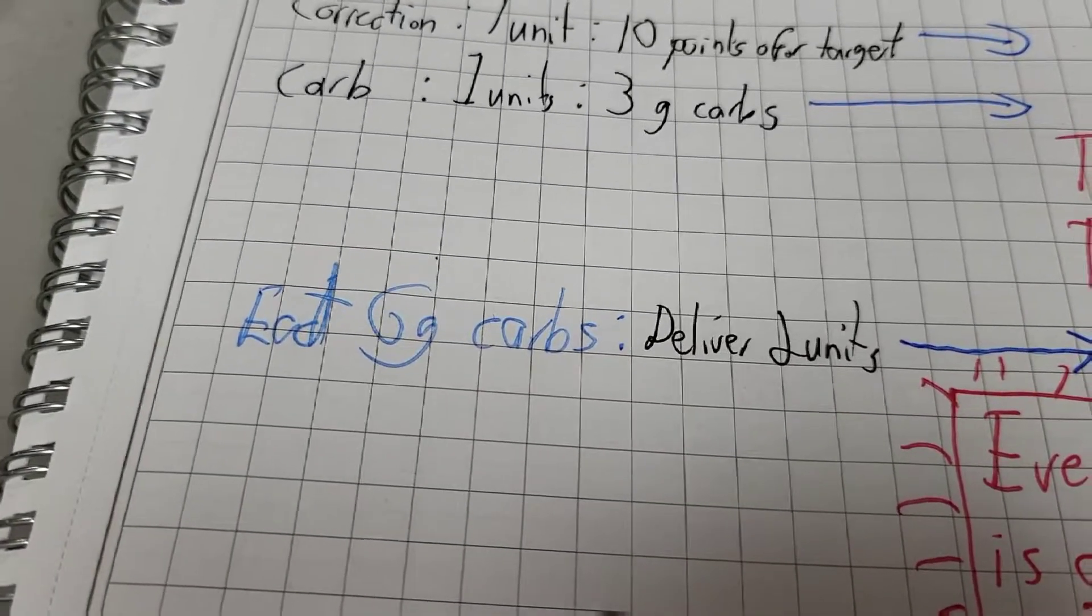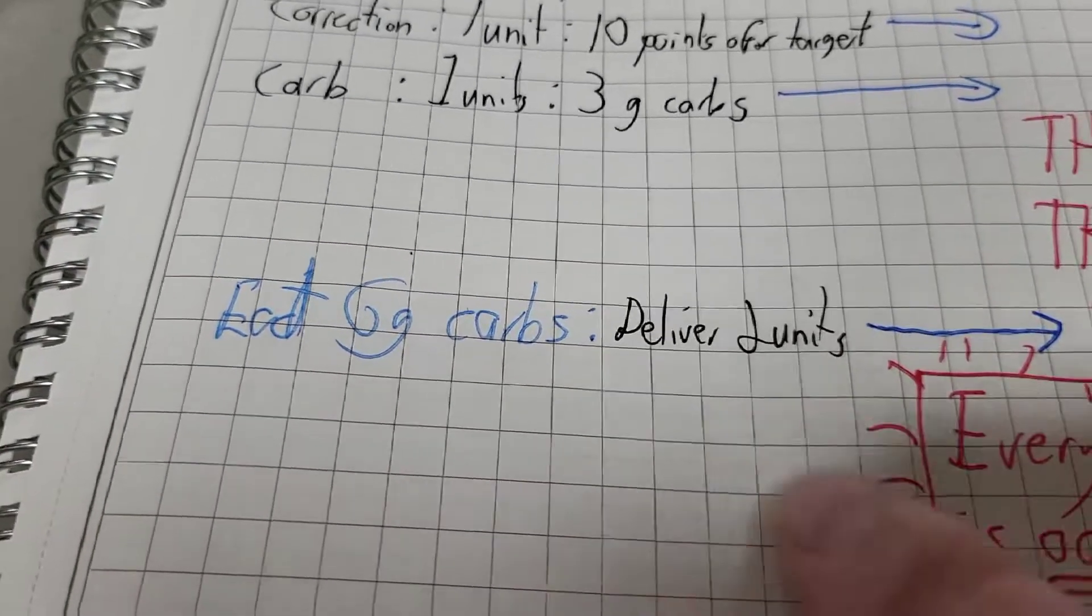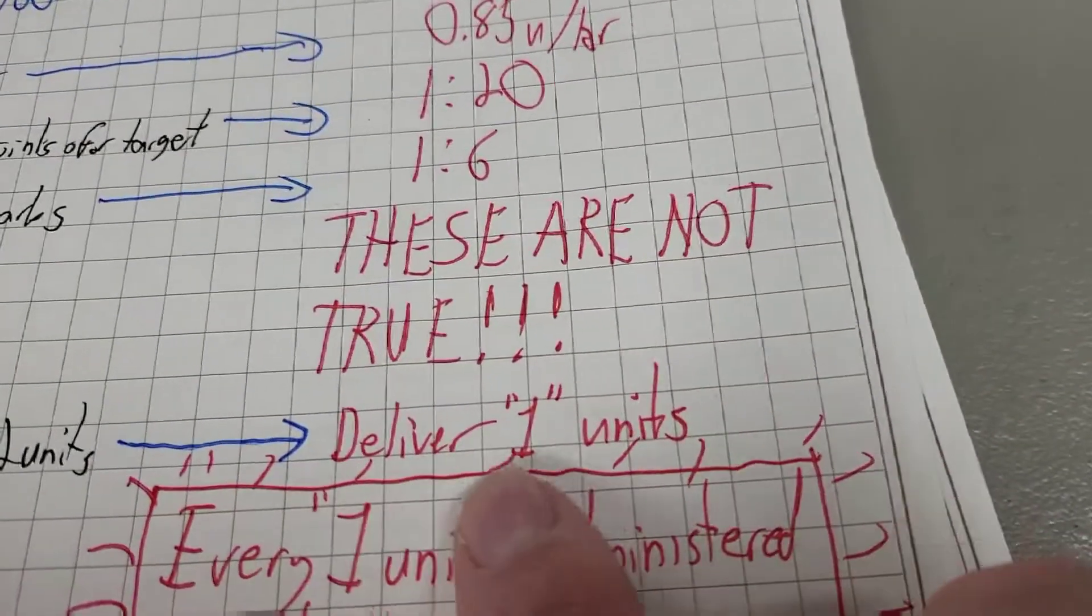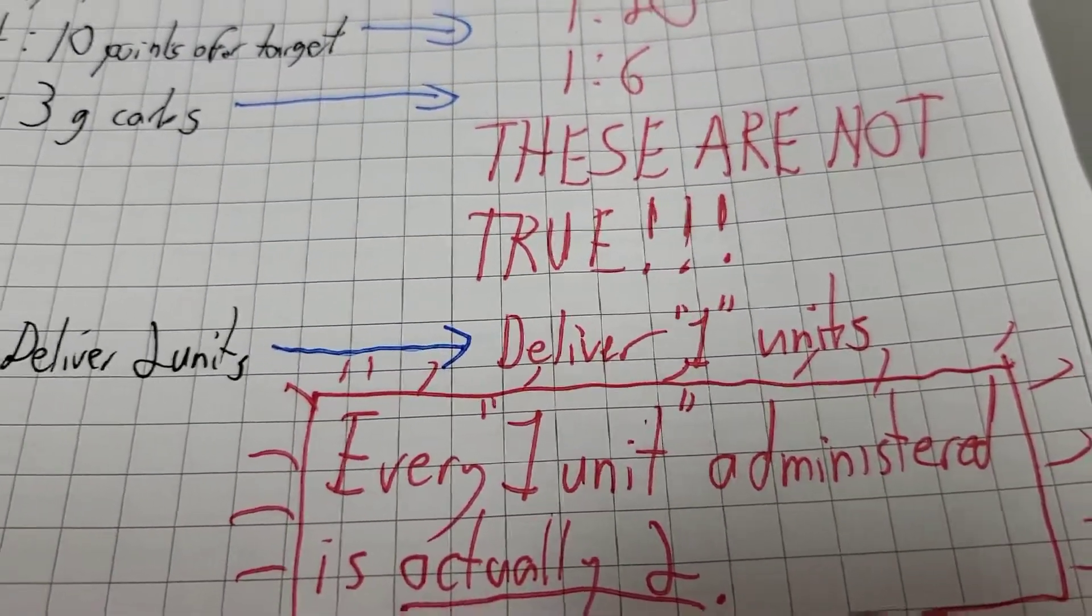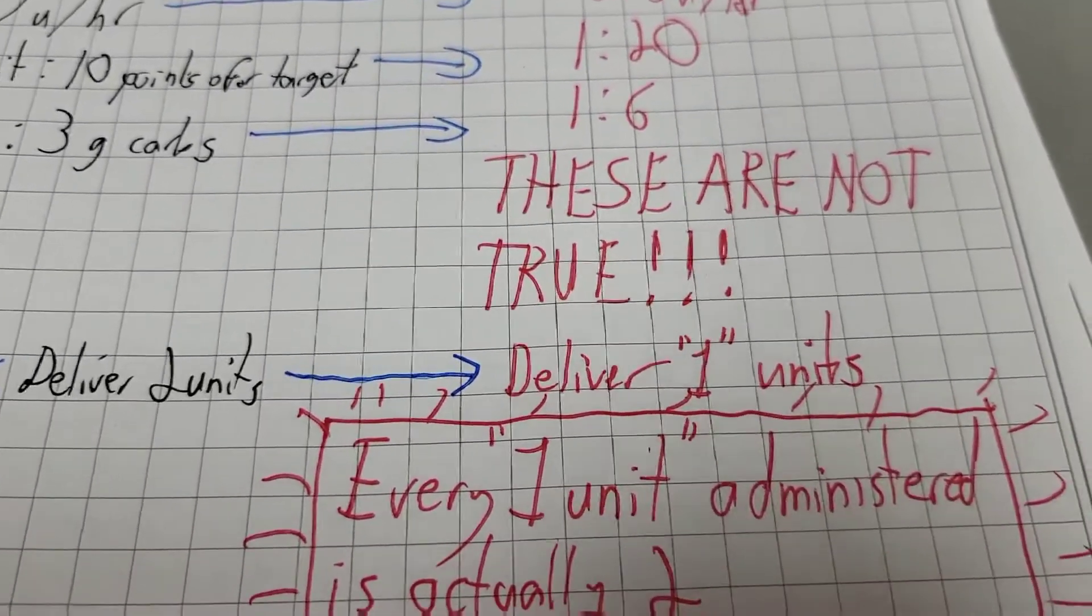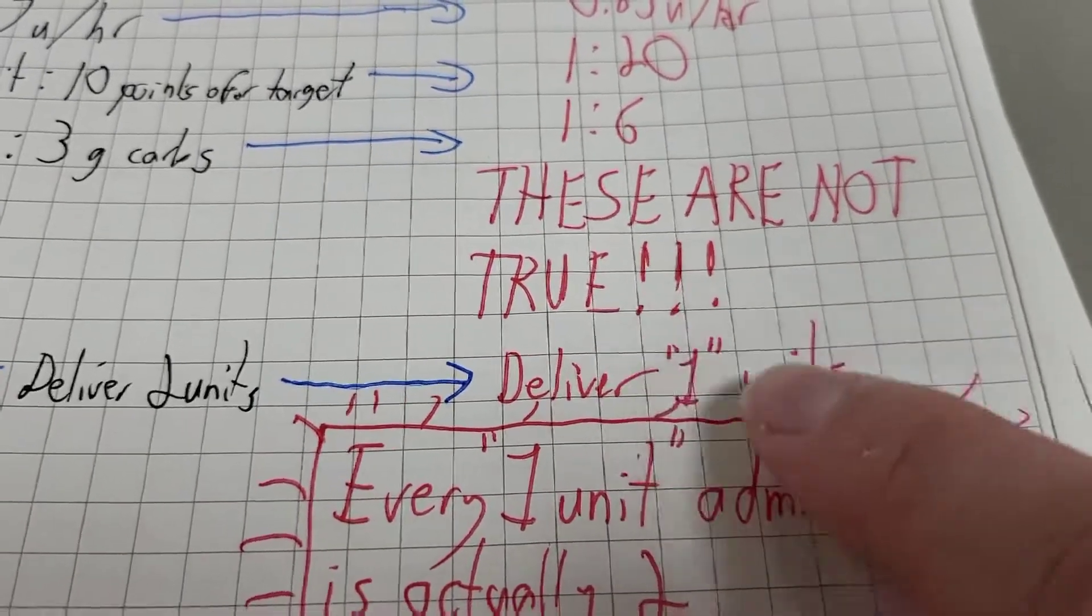If I eat six grams of carbs, for example, using U100, I would deliver two units. Using 200, I deliver one unit, but it's not actually one unit. It is actually two units. The pump just calls it one unit because the pump doesn't understand U200.